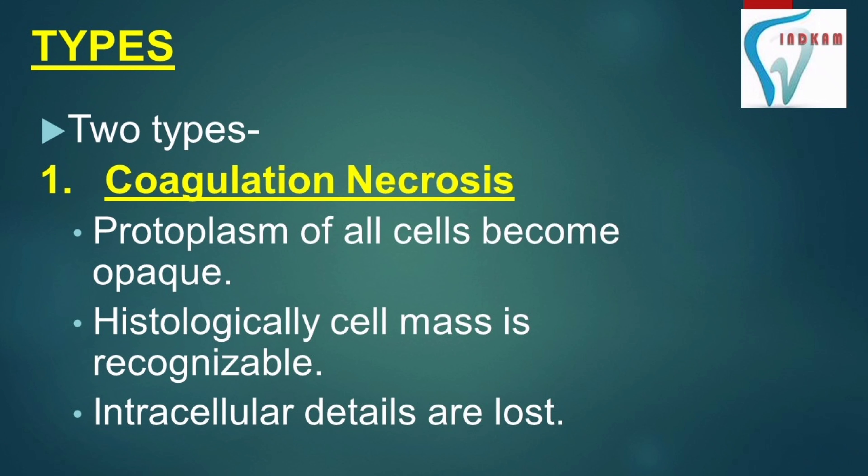Pulp Necrosis is of two types: Coagulation Necrosis and Liquefaction Necrosis. In Coagulation Necrosis, the protoplasm of cells becomes opaque. Histologically, the cell mass is recognizable but intracellular details are lost.